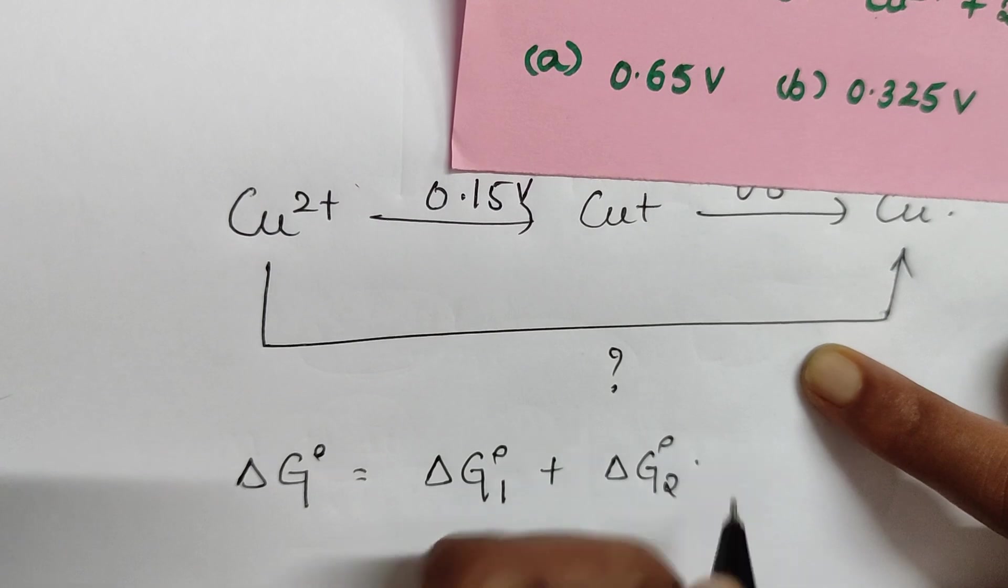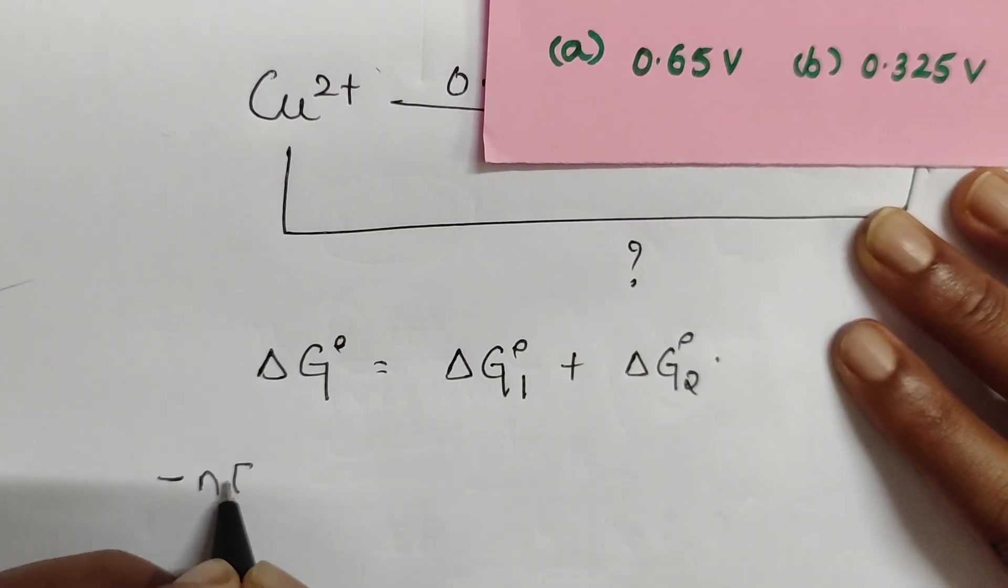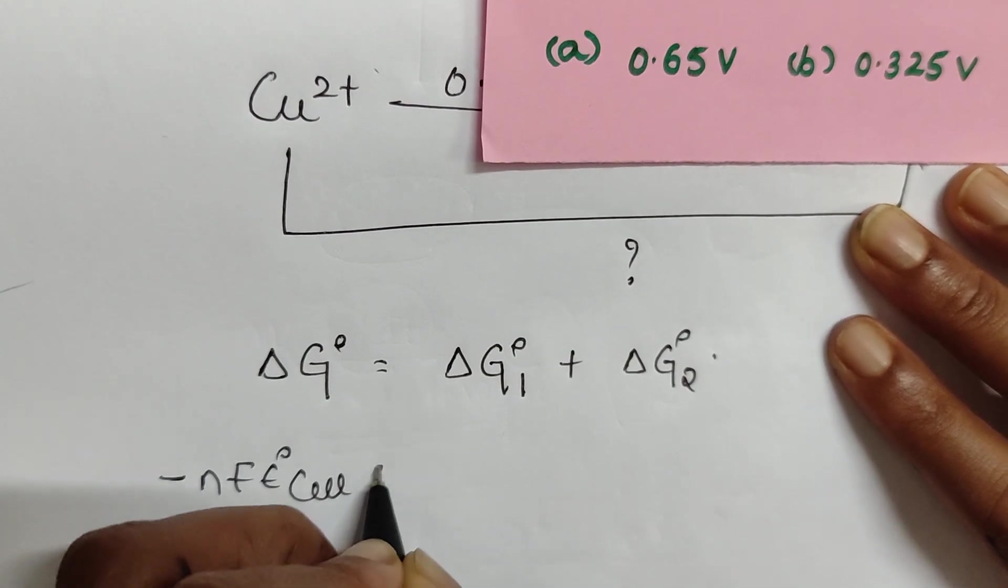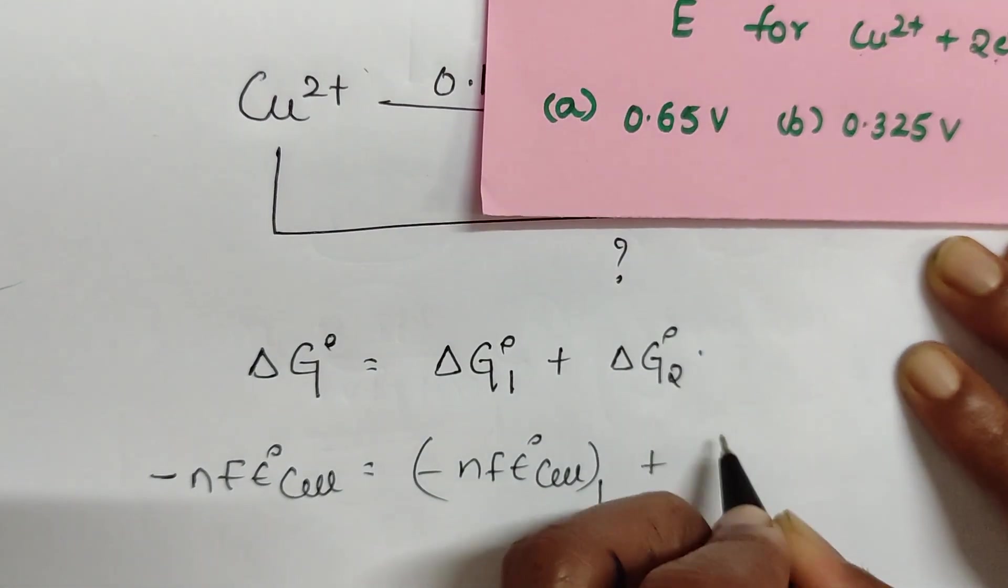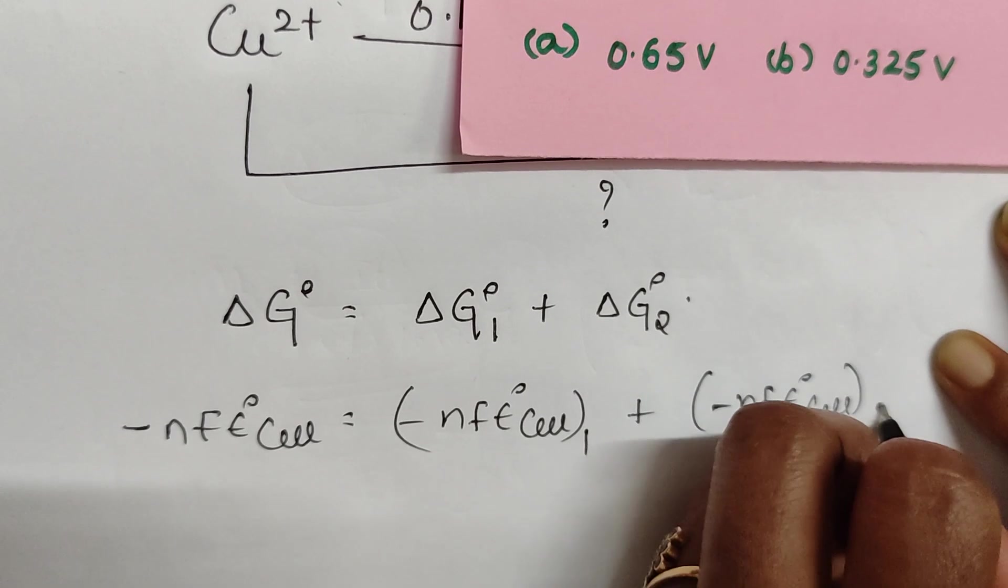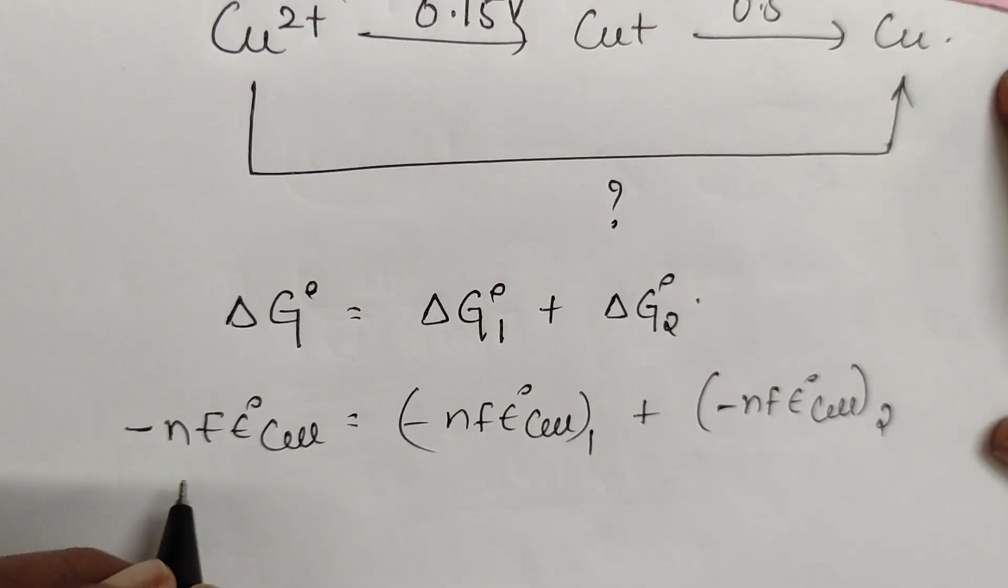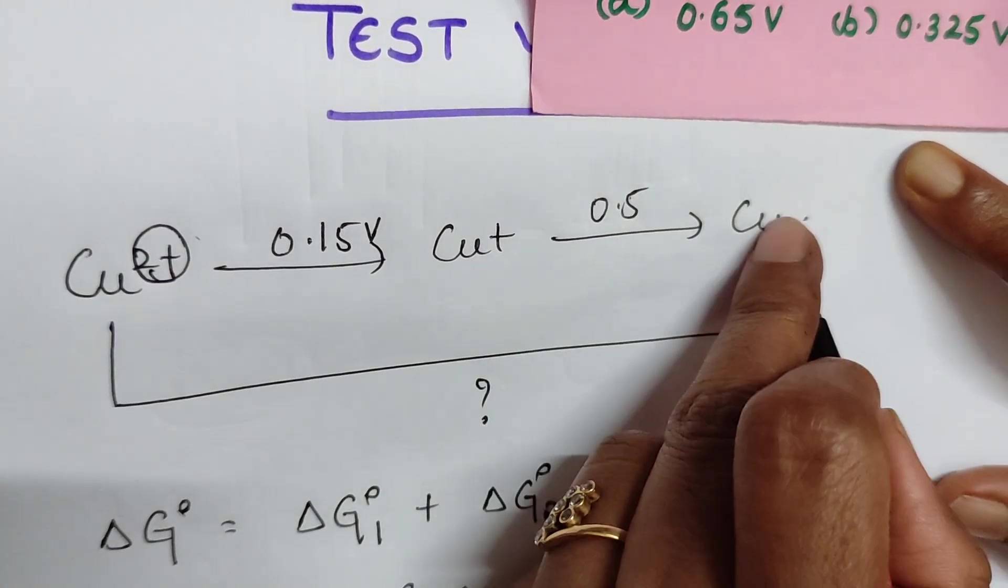Use the formula: minus nF E°cell which is equal to minus nF E°cell of the first reaction plus minus nF E°cell of the second reaction. Here n is the number of electrons changed, changing from plus 2 to 0.